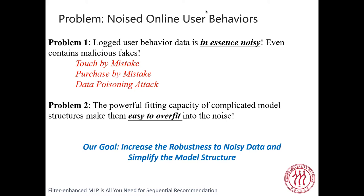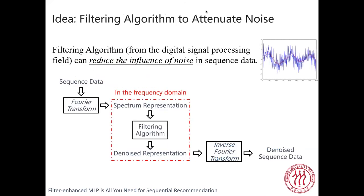Therefore, our goal in this paper is to increase robustness to noisy data and simplify the model structure. To achieve our goal, we consider borrowing the idea of filtering algorithms to attenuate noise in the user interaction history. Filtering algorithms can reduce the influence of noise in sequential data and have been widely used in the digital signal processing field. Given sequential data, we first apply the Fourier transform to get representations in the frequency domain, then use a filtering algorithm to denoise it, and finally apply the inverse Fourier transform to get the denoised sequence data.